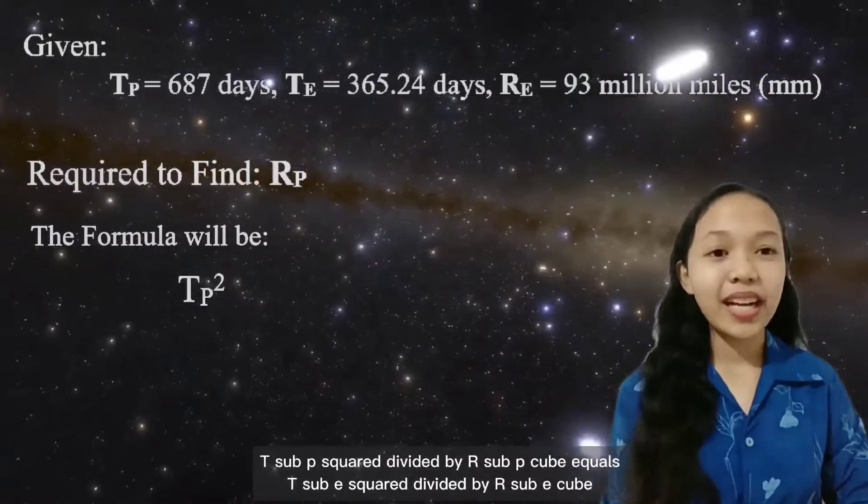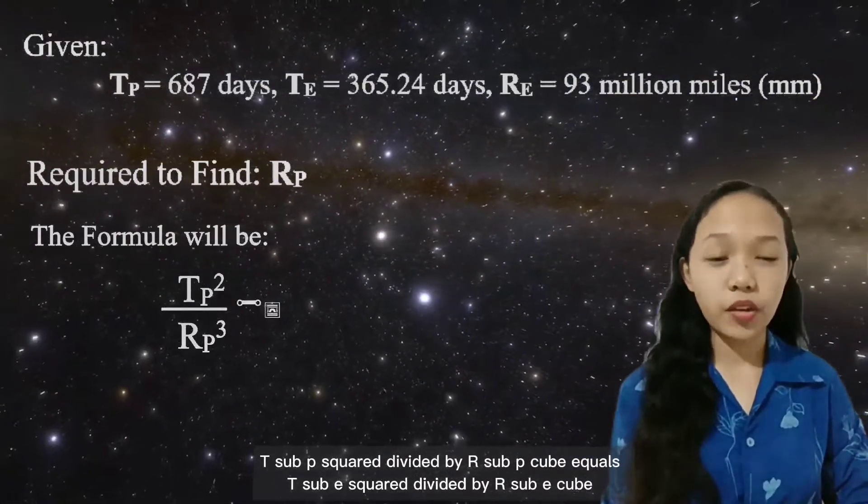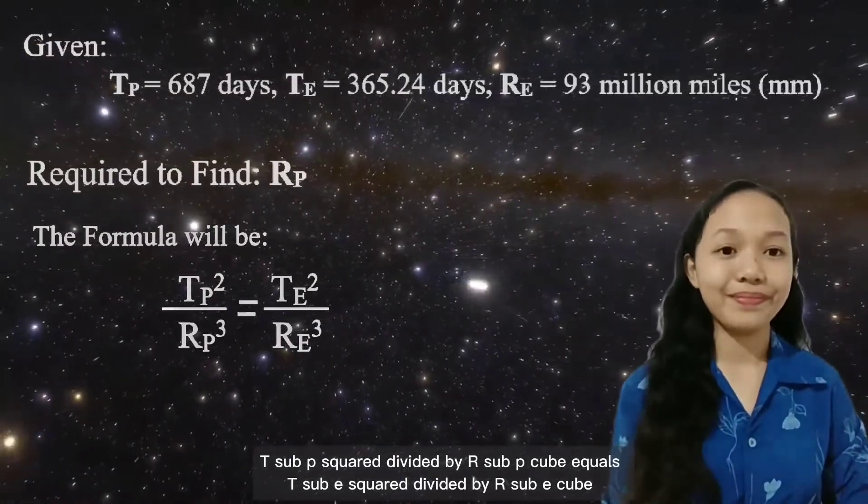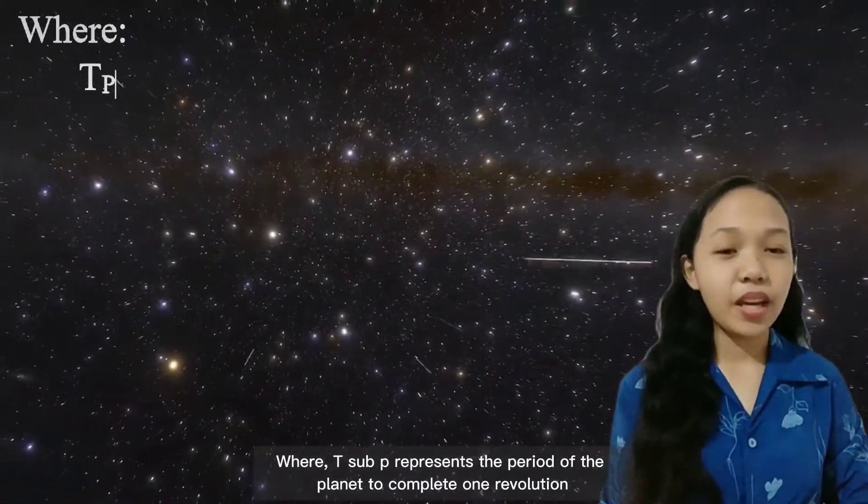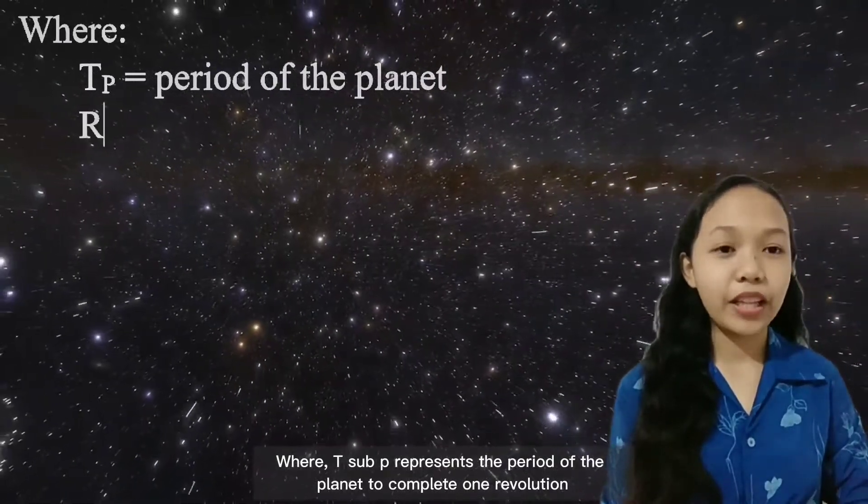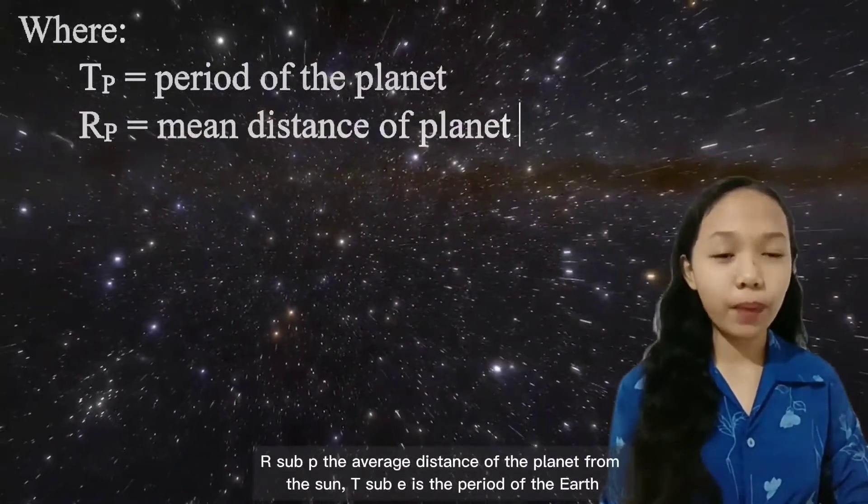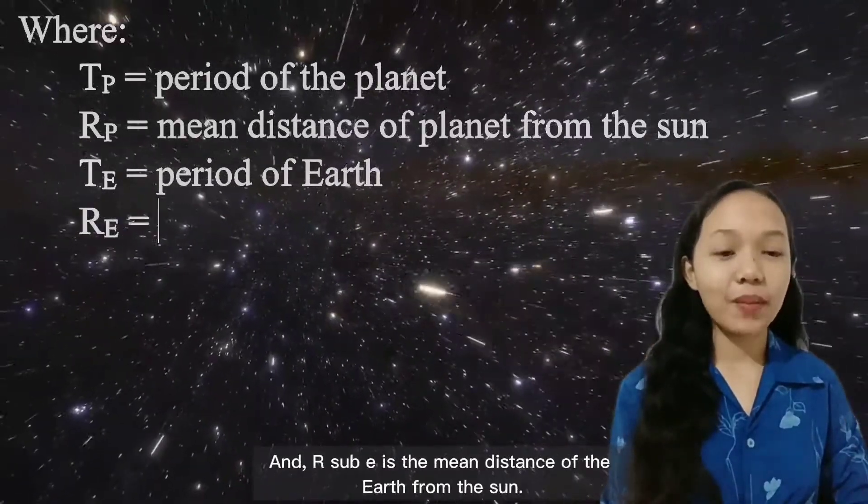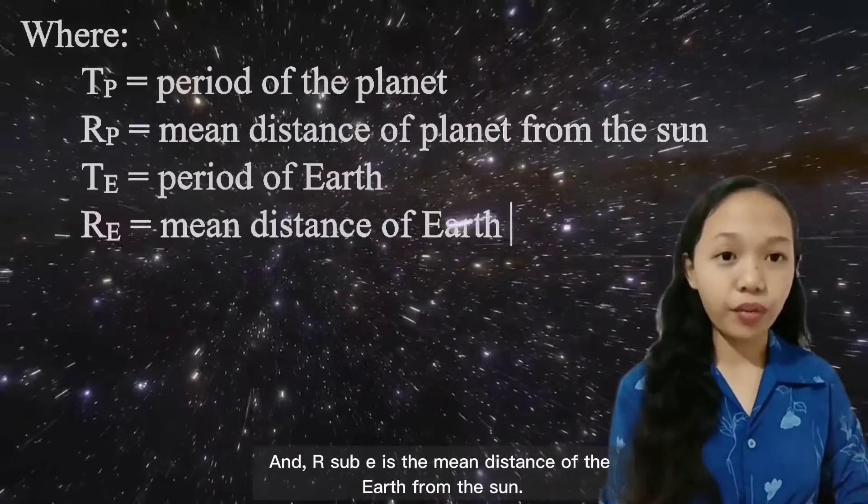The formula will be T sub P squared divided by R sub P cubed equals T sub E squared divided by R sub E cubed. Where T sub P represents the period of the planet to complete one revolution, R sub P the average distance of the planet from the Sun, T sub E is the period of the Earth, and R sub E is the mean distance of the Earth from the Sun.